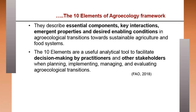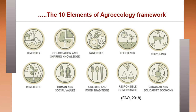The 10 elements describe essential components, key interactions, emergent properties and desired enabling conditions in agroecological transitions. They are useful analytical tools for decision making by practitioners when planning, implementing, managing and evaluating agroecological transitions. The 10 elements are: diversity, co-creation and sharing of knowledge, synergies, efficiency, recycling, resilience, human and social values, culture and food traditions, responsible governance, and circular and solidarity economy.